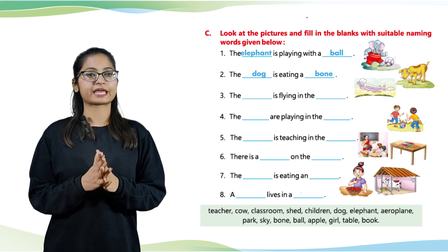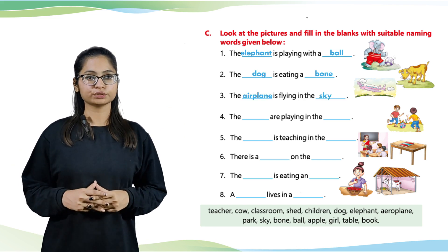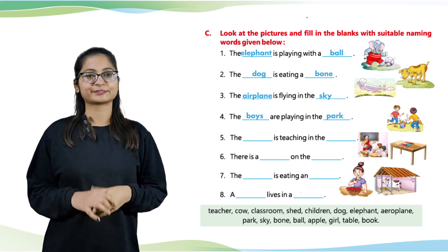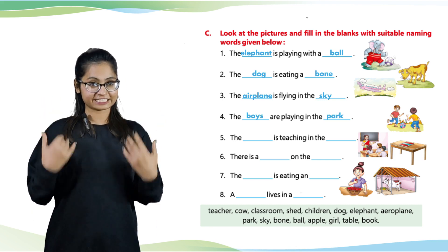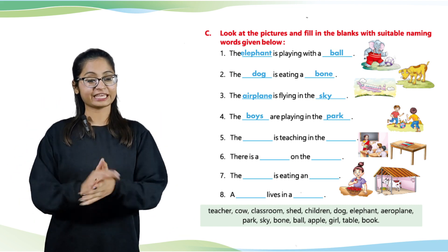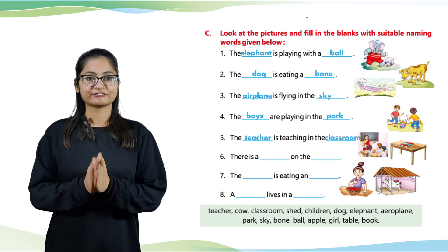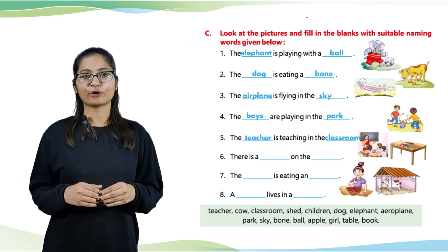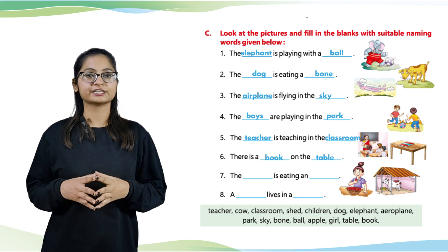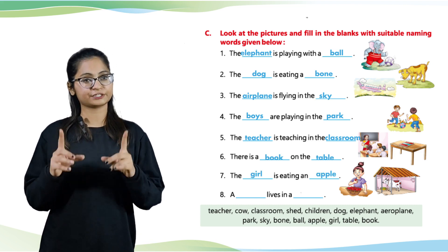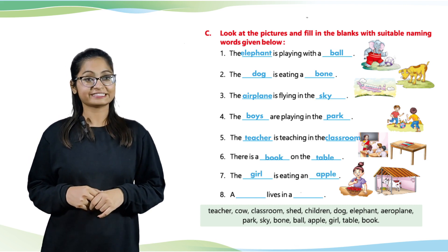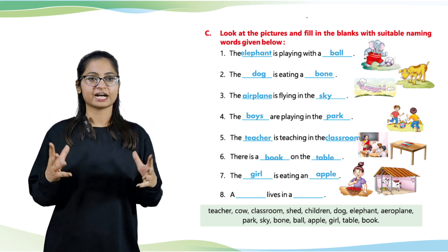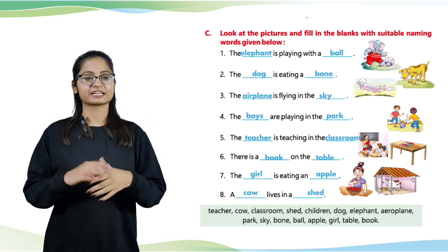The aeroplane is flying in the sky. The boys are playing in the park. The teacher is teaching in the classroom. There is a book on the table. The girl is eating an apple — and you should also eat an apple daily, because an apple a day keeps the doctor away. A cow lives in a shed.